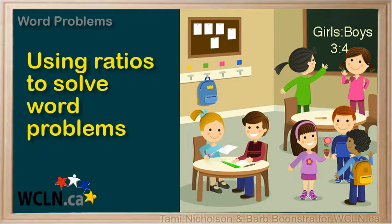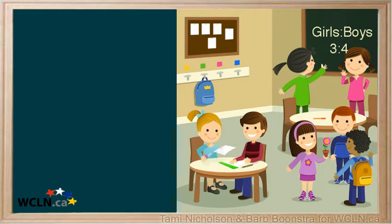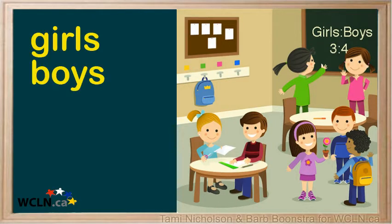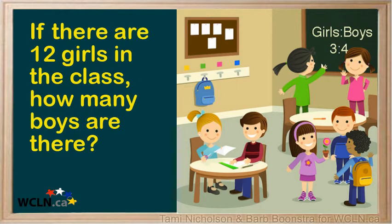Ratios are used to solve word problems. Let's look at a few examples. In this classroom, the ratio of girls to boys is 3 to 4. Here is the question: if there are 12 girls in the class, how many boys are there?